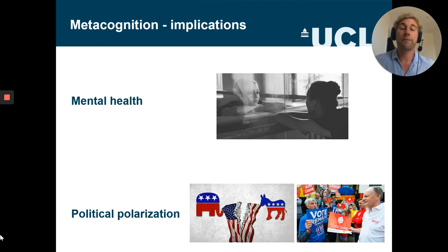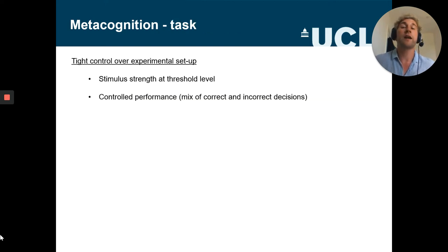Because metacognition in the lab is studied usually with psychophysical tasks notorious for the tight experimental setup. And the reason why we do that is in order to study metacognition, we need to have quite exact control over the stimulus strength that we present as it needs to be at threshold level. So participants need to be able to do a task but it needs to be really challenging for them. Because only then we get a meaningful variety of confidence ratings and moreover we also really need a mix between correct and incorrect decisions, otherwise we're not even able to calculate our measures of metacognitive ability.